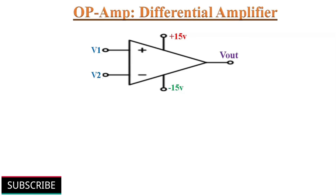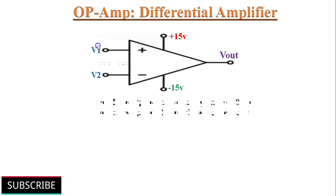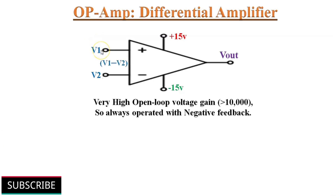The input stage of an Op-Amp is the Differential Amplifier stage. A Differential Amplifier can accept two input signals and amplifies the difference between these two input signals. The open loop voltage gain of an Op-Amp is very high; therefore an extremely small input voltage drives the Op-Amp into the saturated output stage. Because of this reason, Op-Amp is almost always operated with negative feedback.